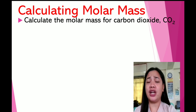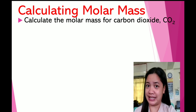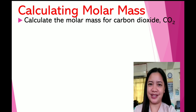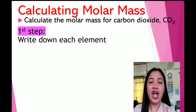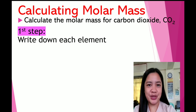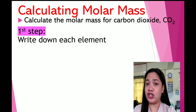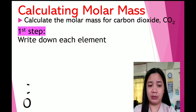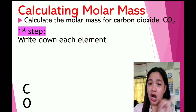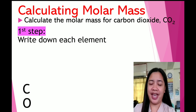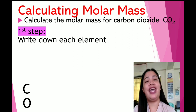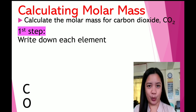Do not forget that we are going to follow the steps. Take note of the following steps. First step: you have to write down each element. For our given problem, the elements are carbon — the symbol is letter C — and oxygen, which is letter O.